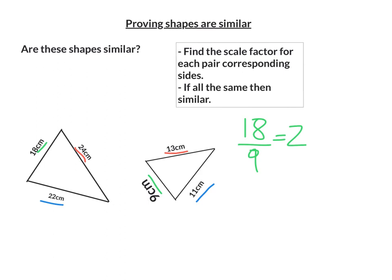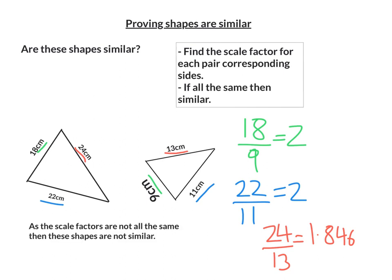And then if we pick the blue ones, the medium-sized ones, 22 over 11, that gives me 2 as well. Okay, that moves us on then to the red size, the two longest sides, and we've got 24 over 13, which if I put in my calculator gives me 1.846, which is obviously different from the two 2s. So as all the scale factors have to be the same, and they're not, these two shapes are not similar. And we would write, as the scale factors are not all the same, then these shapes are not similar.